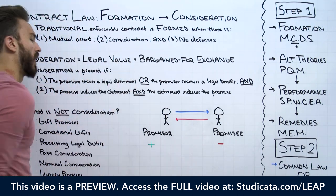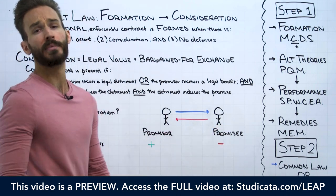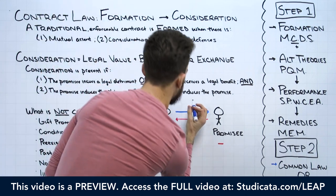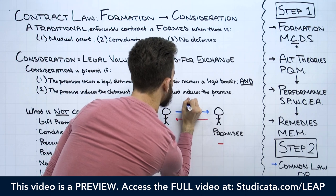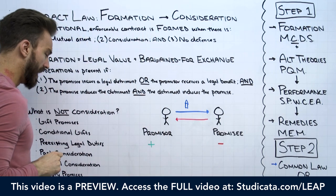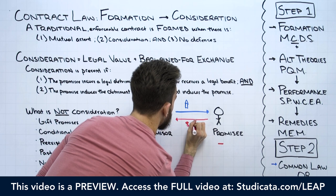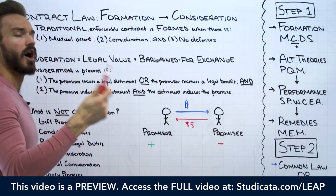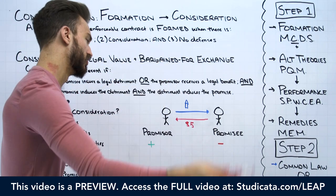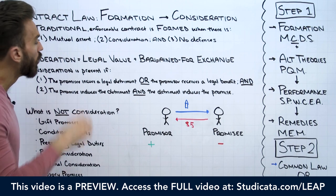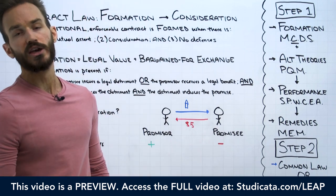We're going to run through our two elements. I, the promisor, am promising you the dry erase marker in exchange for $5. That's our mutual assent — the offer and acceptance. I'm offering you the dry erase marker for $5 and you've accepted. Running through element number one: has the promisee — you — incurred a legal detriment?